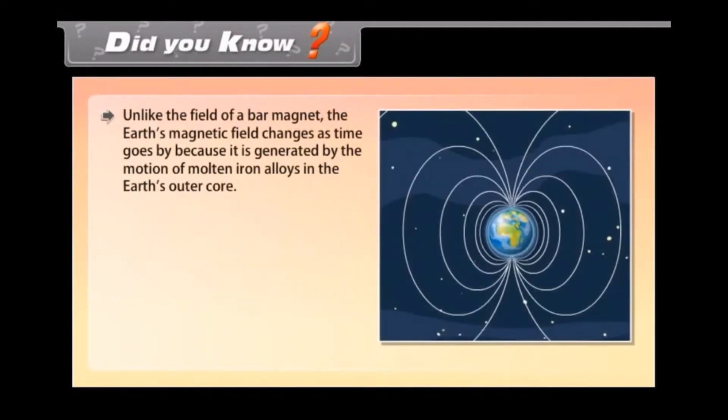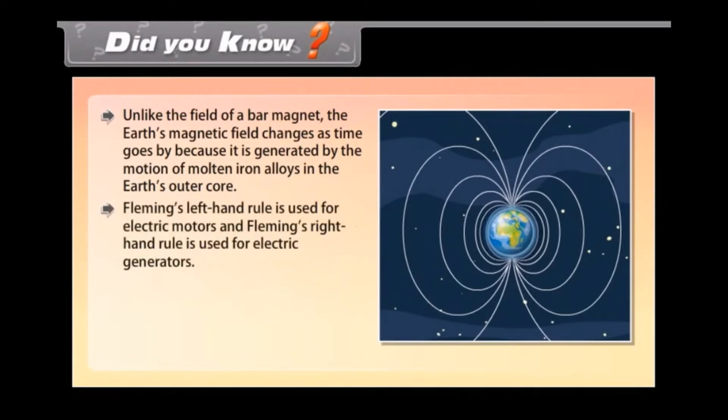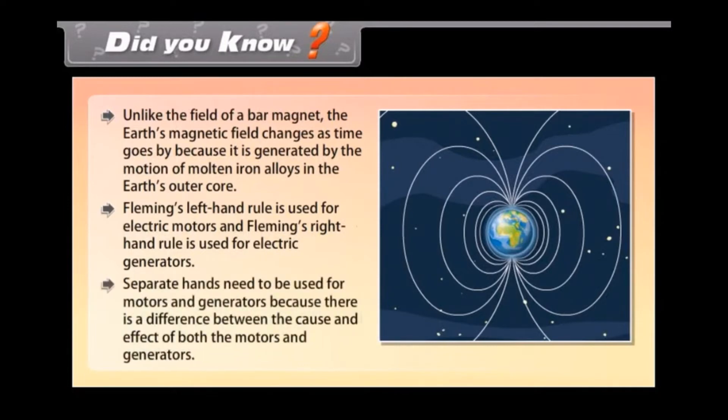Did you know? Unlike the field of a bar magnet, the earth's magnetic field changes as time goes by because it is generated by the motion of molten iron alloys in the earth's outer core. Fleming's left-hand rule is used for electric motors and Fleming's right-hand rule is used for electric generators. Separate hands need to be used for electric motors and generators because there is a difference between the cause and effect of both the motors and generators.